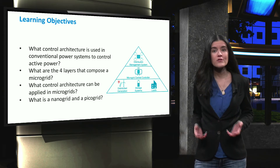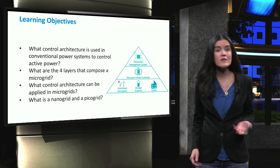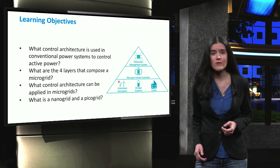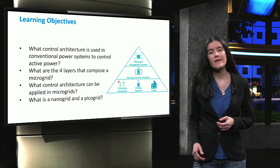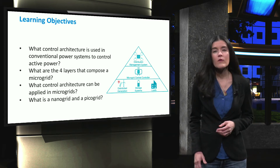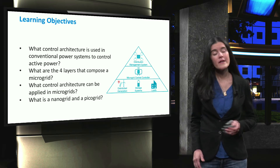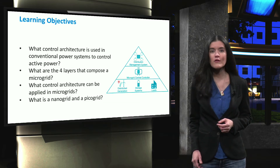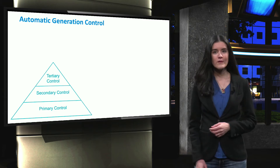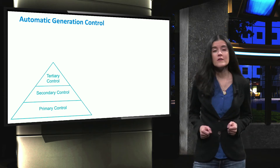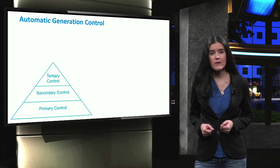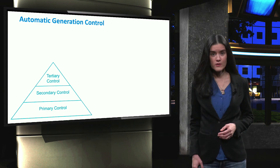In this video, we will review the control architecture that is used in traditional power systems to adjust the power output of multiple generators according to changes in the load. We will also look at the integrated control architecture that can be applied in microgrids. Finally, we will introduce the concepts nanogrid and picogrid. Let's start with the hierarchical control architecture used to control the power output of generators in traditional power systems, also known as automatic generation control.